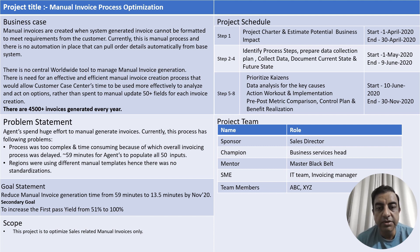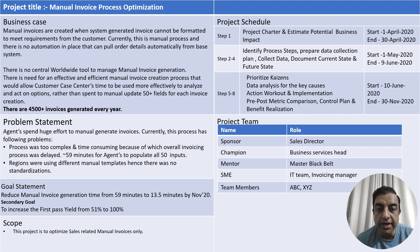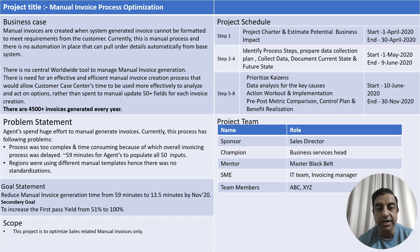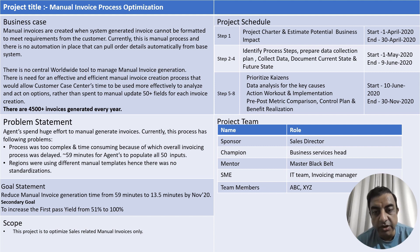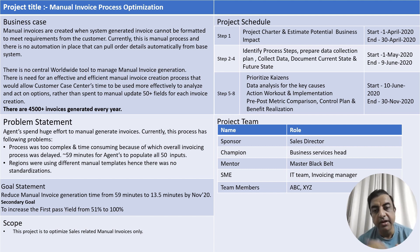The team took an eight-step lean problem-solving approach. Step one was to create the project charter and estimate potential business impact. Steps two to four involved identifying various process steps, preparing a data collection plan, collecting data, and documenting the current state and future state. Steps five to eight required the team to prioritize Kaizen data analysis for key causes, action workout and implementation, followed by pre and post analysis, control plan, and benefit realization.